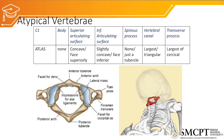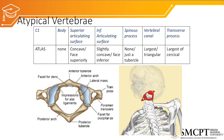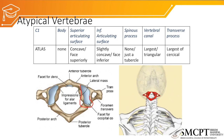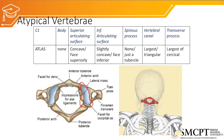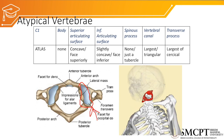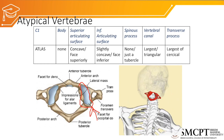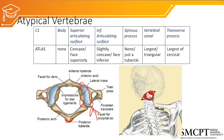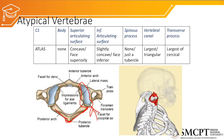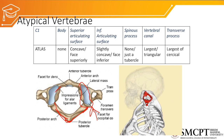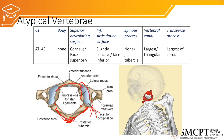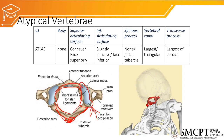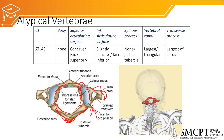The first atypical vertebra is C1, the atlas. The atlas has no body. The superior articulating facet is concave and faces superiorly. The inferior articulating facet is slightly concave and faces inferiorly. The atlas does not have a spinous process — it has only a small posterior tubercle, which continues sideways as the posterior arch of the atlas. The atlas has both a posterior arch and an anterior arch. The vertebral canal is large and triangular, and the atlas has the largest transverse process of all cervical vertebrae.